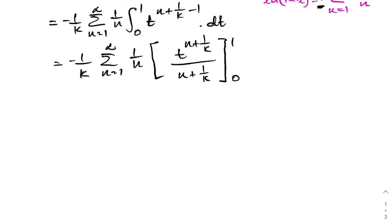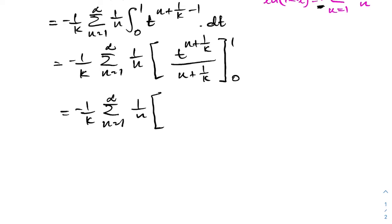Applying the limits, we have minus (1/k) times the infinite sum from n equals 1 to infinity of (1/n) times (1 over n plus 1/k).